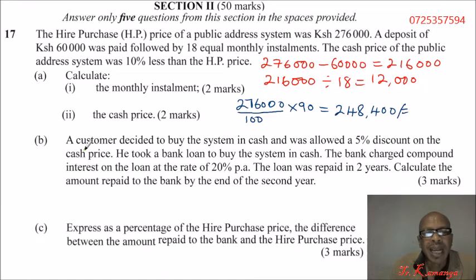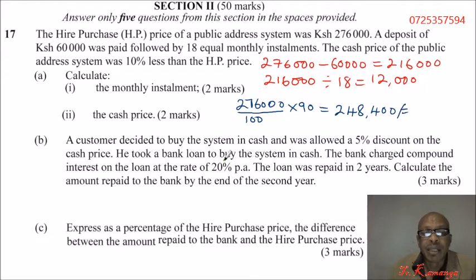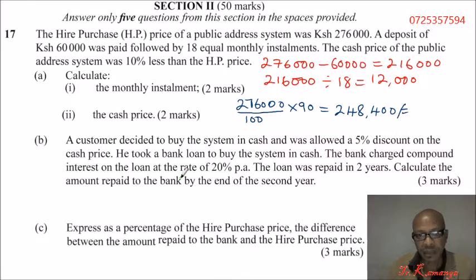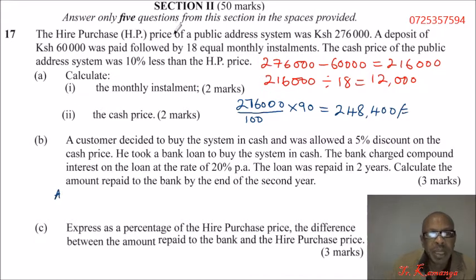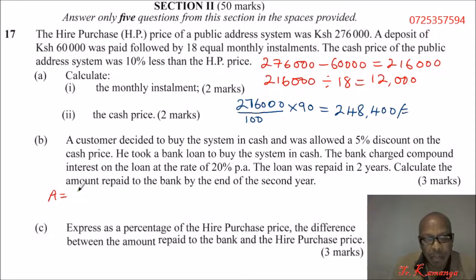Part (b): a customer decided to buy the system in cash and was awarded a 5 percent discount on the cash price. He took a bank loan to buy the system in cash. The bank charged compound interest on the loan at a rate of 20 percent per annum, and the loan was repaid in two years. Calculate the amount repaid to the bank by the end of the second year. Since it is compound interest, the amount equals the principal — but first, let's get the discounted amount the customer paid.